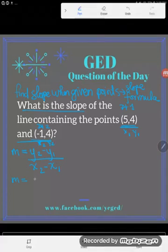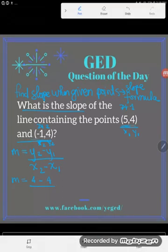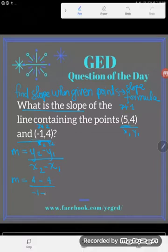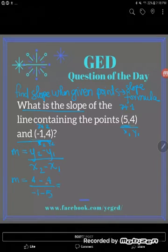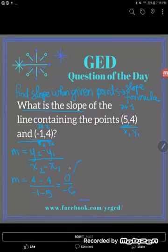We take the second Y first, so that's 4, and we subtract the first Y, and that's also a 4. Then we'll take the second X, which is a negative 1, and from that we'll subtract the first X, which is a 5. Now, 4 minus 4, of course, is 0, and negative 1 minus 5 is negative 6, but I have something important to say.